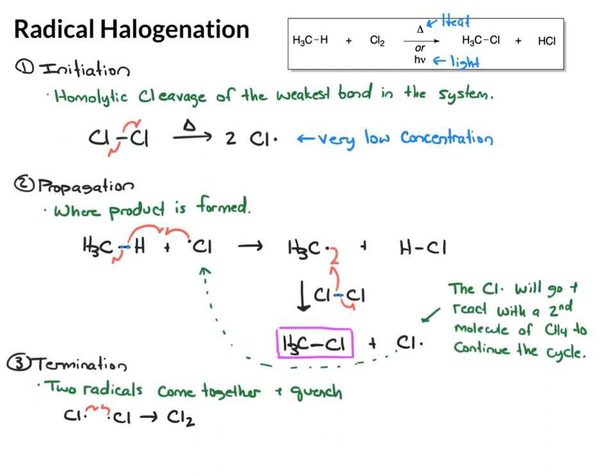Or if you have two methyl radicals that happen to run into one another. If that happens, those will come together and get quenched to give us ethene.